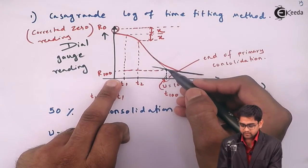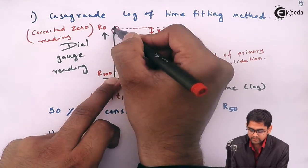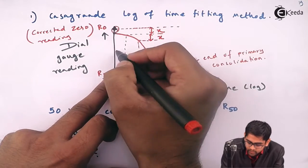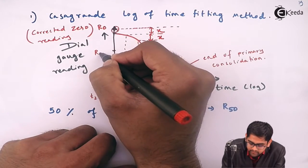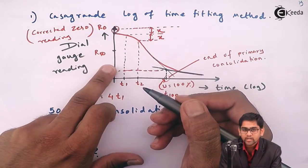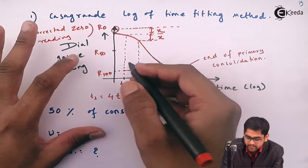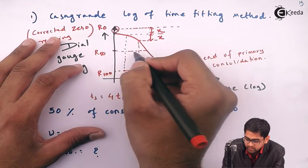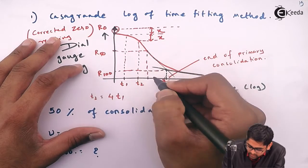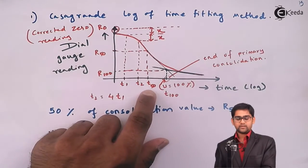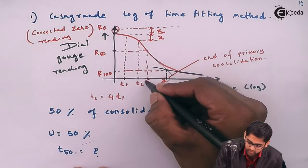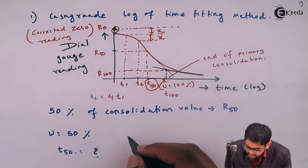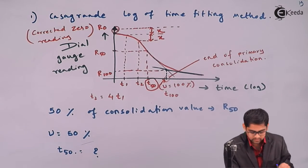From the start (r0) and end (r100) of primary consolidation, you can easily calculate r50 — the dial gauge reading corresponding to 50% consolidation. You then project this reading onto the curve and find the time corresponding to the 50% value. Once you know t50, you place it into the consolidation equation to calculate cv.